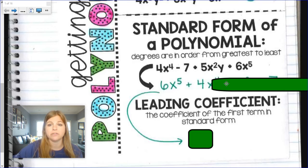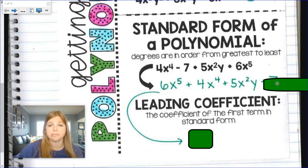4x to the 4th, then 5x squared y, and then a negative 7. So highest degree. Degree of 5, 4, 3, and then 0.